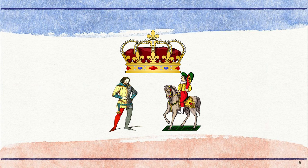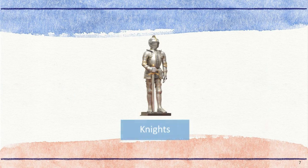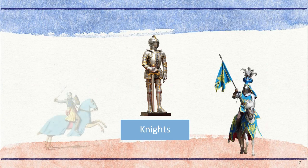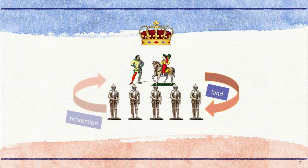Nobles had a lot of power and responsibility in society. They protected the king's land, organized the army, and paid taxes to help support the kingdom. Knights were next in line of power after the nobles. They served the nobles as the king's army and were the protectors of society who could be called into battle at any moment. Nobles gave knights smaller pieces of their land in exchange for their service in battle.